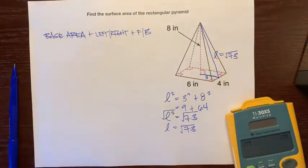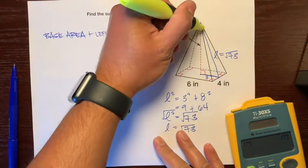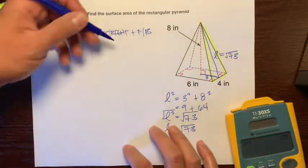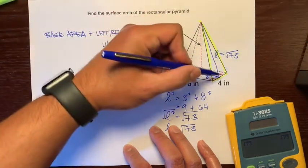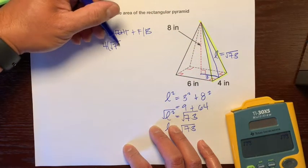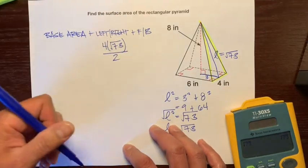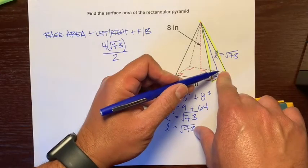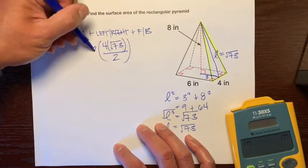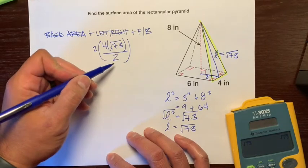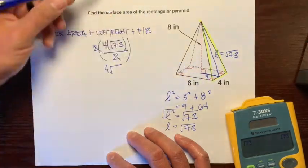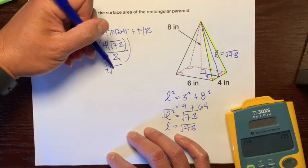We have the slant height for the left and right triangles. The base of this triangle is 4, and the slant height — the height of this face — is the square root of 73. So the area is base times height divided by 2: 4 times √73, over 2. This face is congruent to the left face, so we multiply by 2 and cancel the 2s. The total area of the left and right triangles is 4 radical 73.